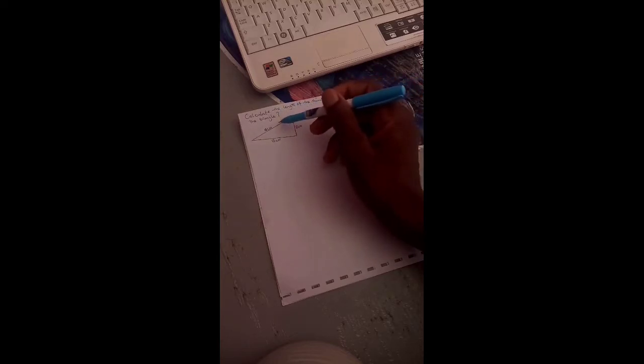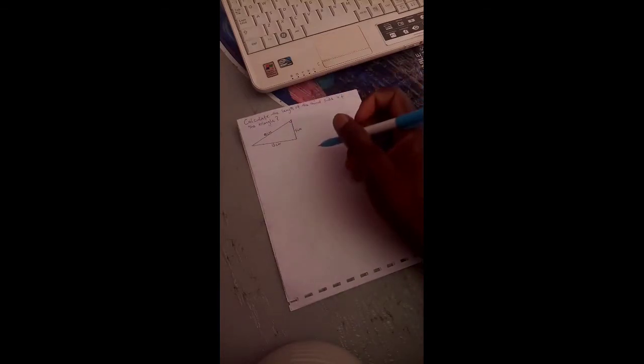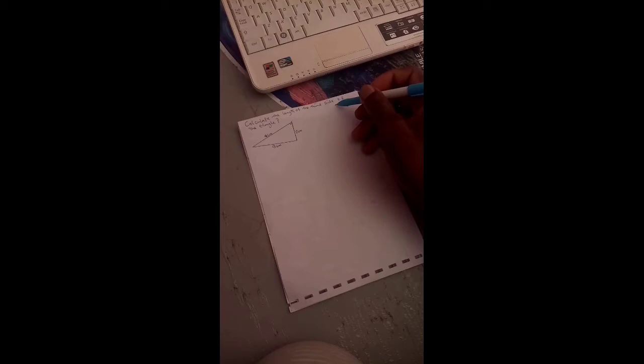The first example says calculate the length of the third side of the triangle. We are asked to calculate the third side of this triangle by using Pythagoras rules. It's very simple.